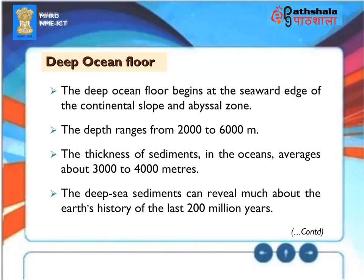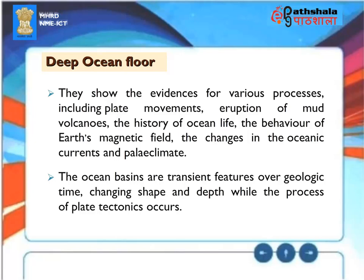Deep Ocean Floor. The deep ocean floor begins at the seaward edge of the continental slope and the abyssal zone, with depths ranging from 2,000 to 6,000 meters. The thickness of sediments in the oceans averages about 3,000 to 4,000 meters. Deep-sea sediments can reveal much about the Earth's history over the last 200 million years, showing evidence for plate movements, eruption of mud volcanoes, the history of ocean life, behavior of Earth's magnetic field, changes in oceanic currents, and paleoclimate. Ocean basins are transient features over geologic time, changing shape and depth as plate tectonics occurs.